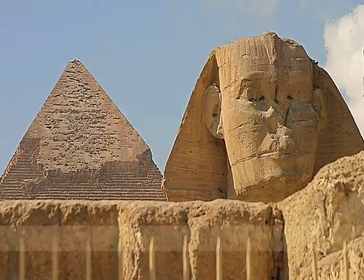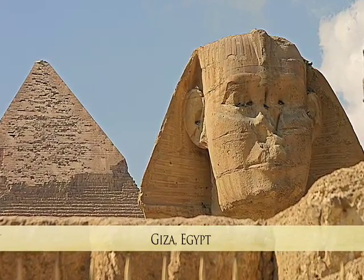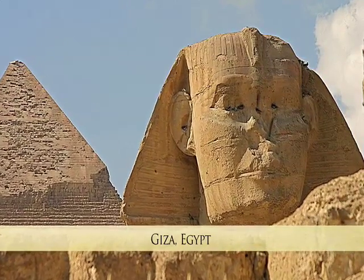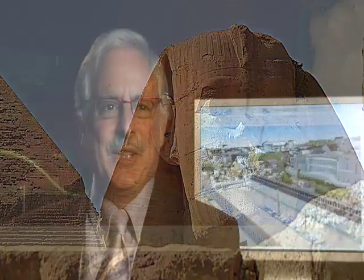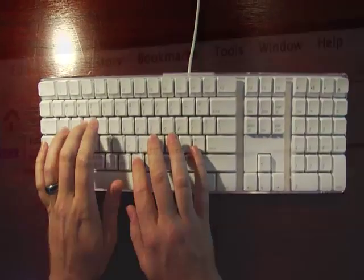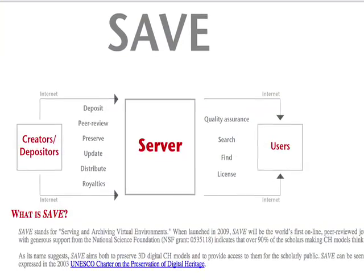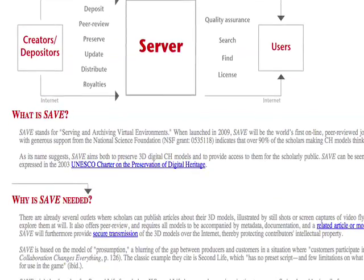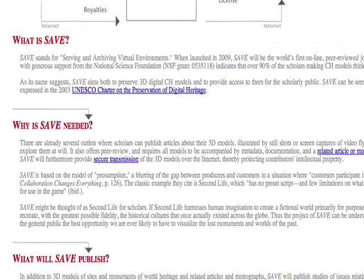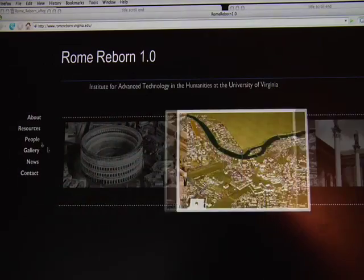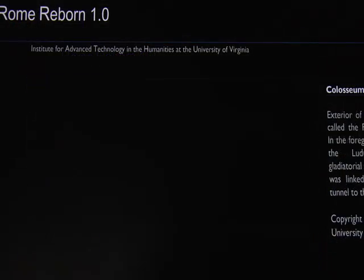For example, there's Giza — the Boston Museum of Fine Arts, which has excavated Giza and has the largest collection of information and material about the site, approached us to work with them on making a 3D model of Giza. And finally, how are we going to gather all of these models, preserve them, transmit them, and make them available to the general public, students, and scholars around the world? Our institute has started a project called SAVE, which stands for Serving and Archiving Virtual Environments. SAVE will be the world's first online peer-reviewed journal where scholars can publish these 3D models, related metadata, archaeological documentation, and monographs that explain the significance of the sites, their history, and the history of the modeling project itself.